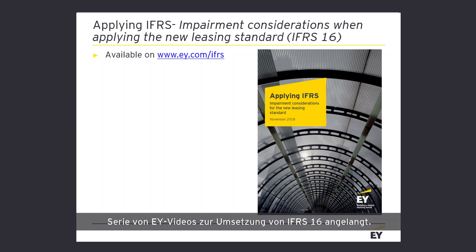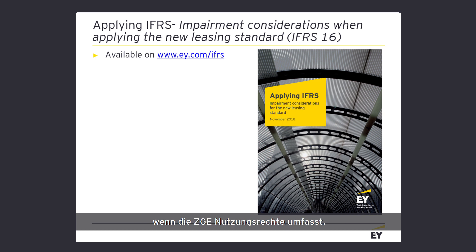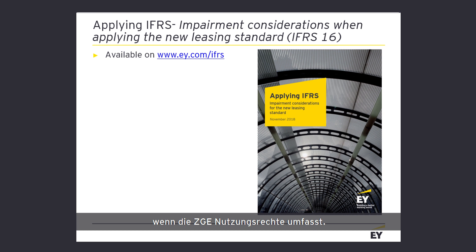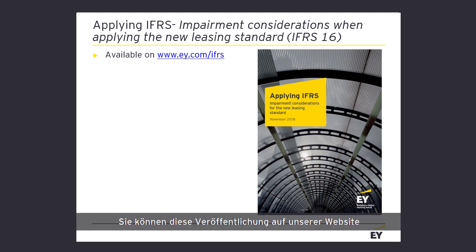We've come to the end of the fourth episode of this series of EY videos on the implementation of IFRS 16. There are a number of other questions, including those in relation to the application of IAS 36 when the cash-generating unit includes right-of-use assets. You can refer to our publication 'Applying IFRS: Impairment Considerations when applying the new leasing standard IFRS 16', available on our website at www.ey.com/IFRS. Thank you for watching. I'm Emily Moll and we will bring you more insights on IFRS 16 in our next episodes.